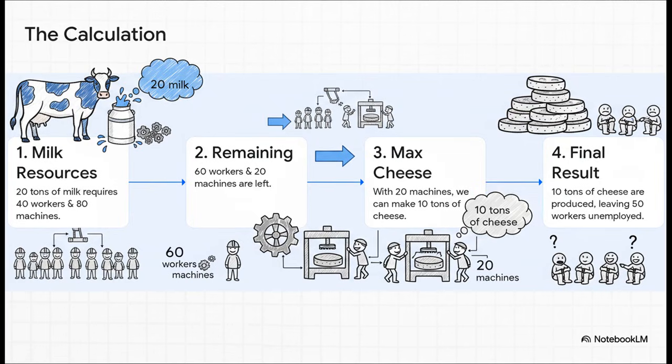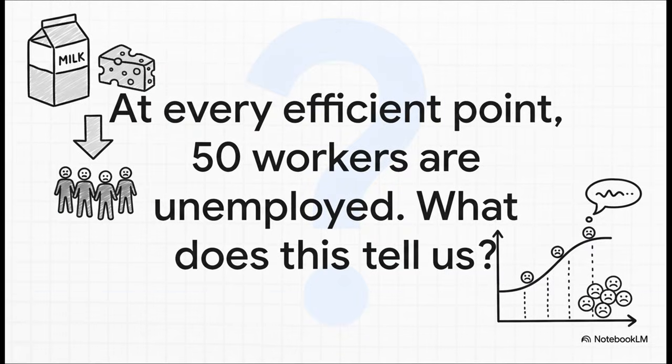And making that cheese only requires 10 workers. So out of the 60 workers we had left over, 50 are still unemployed. And that right there, that reveals the core insight of our entire model. We've seen that at every single efficient point on this curve, 50 workers are left without a job.